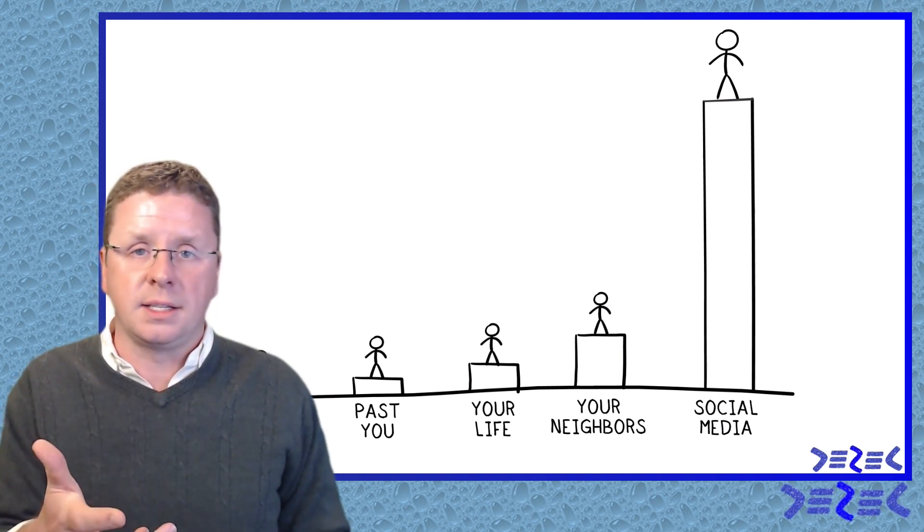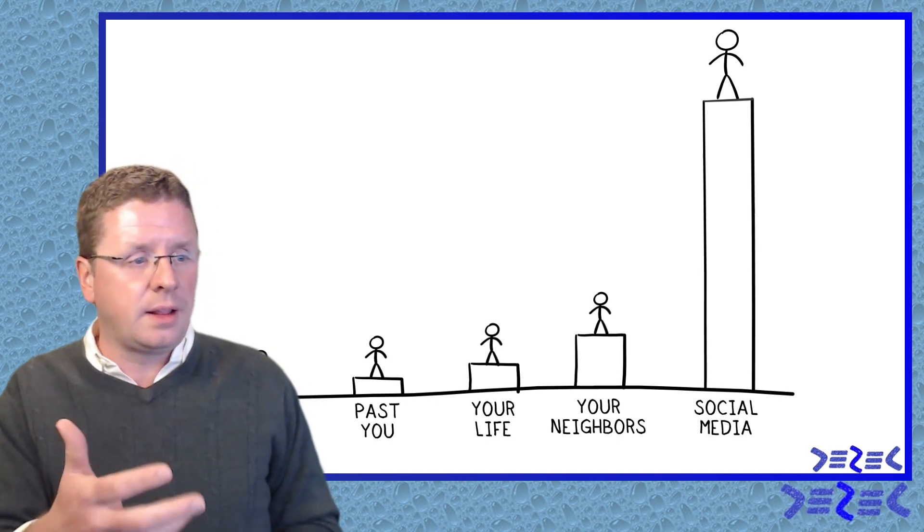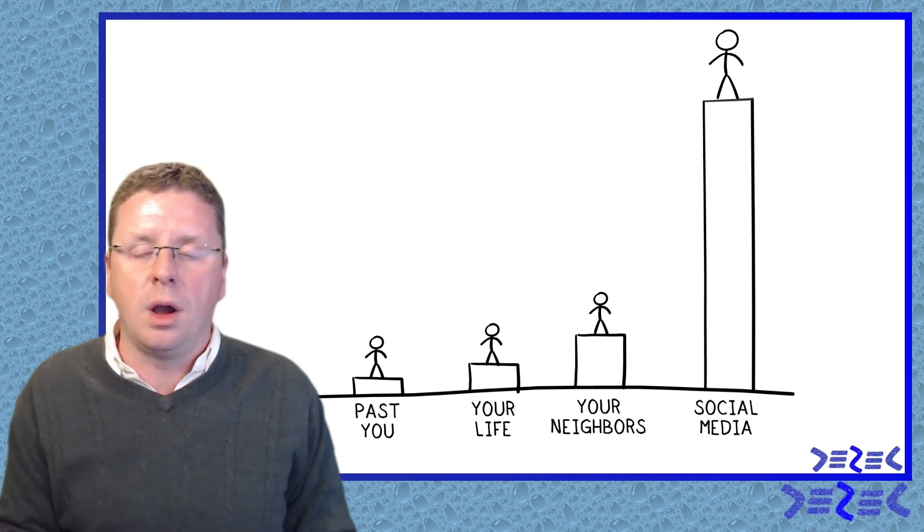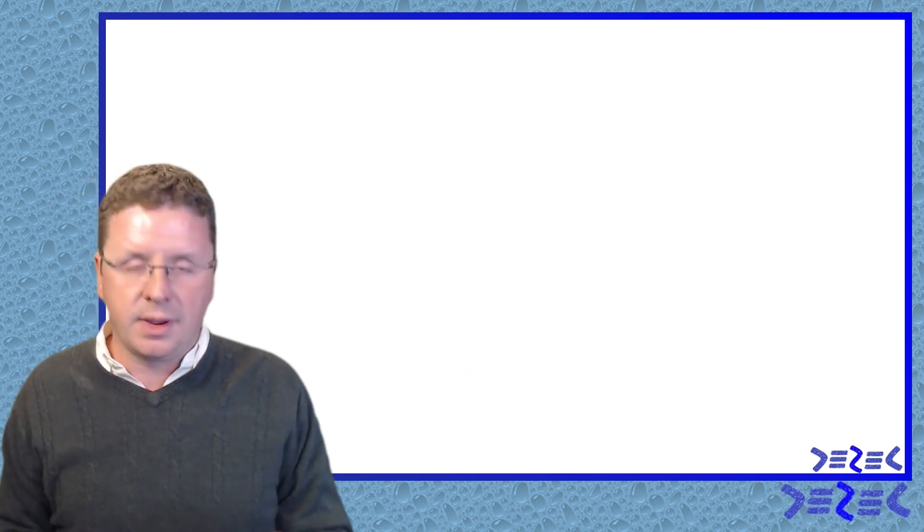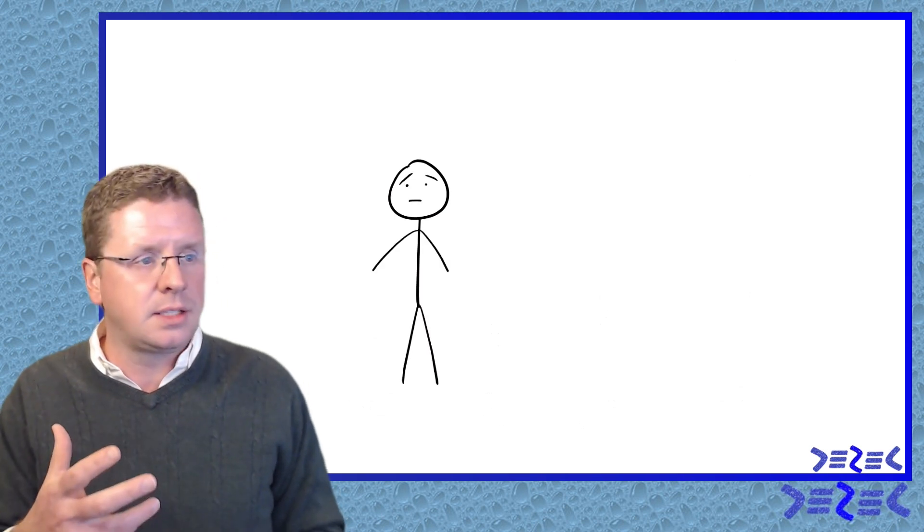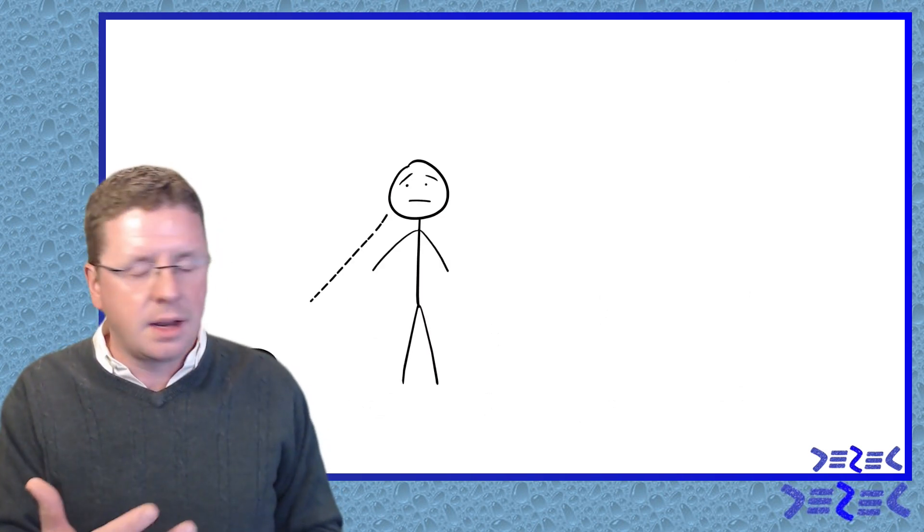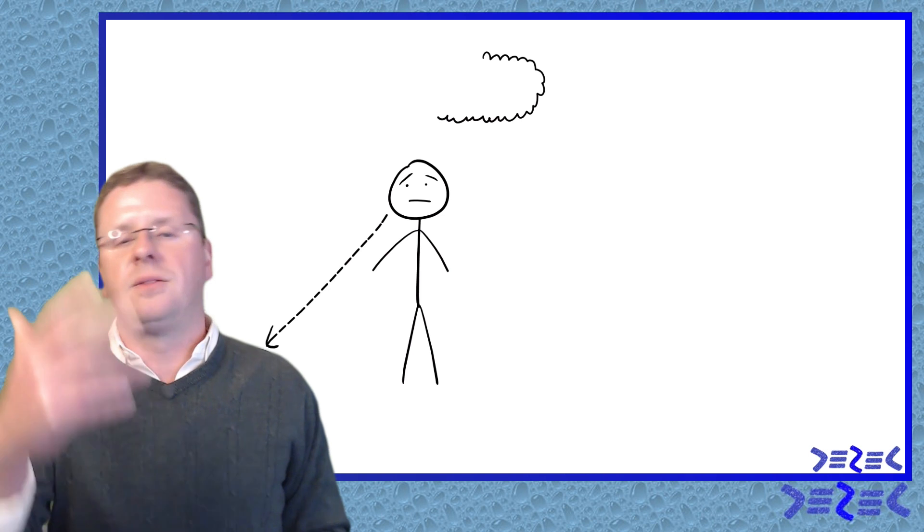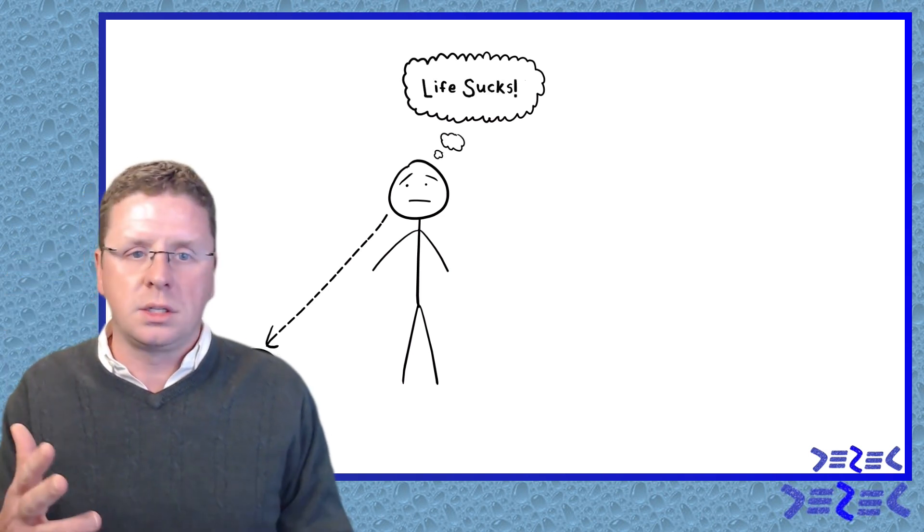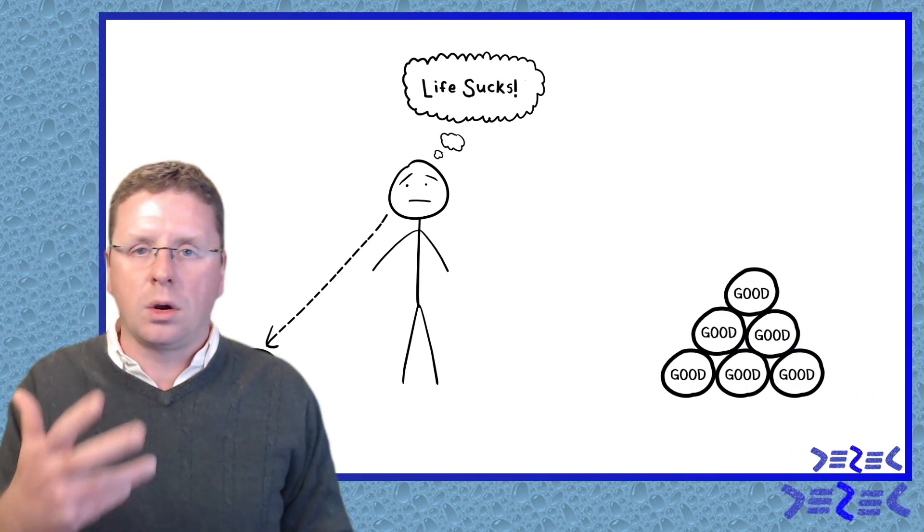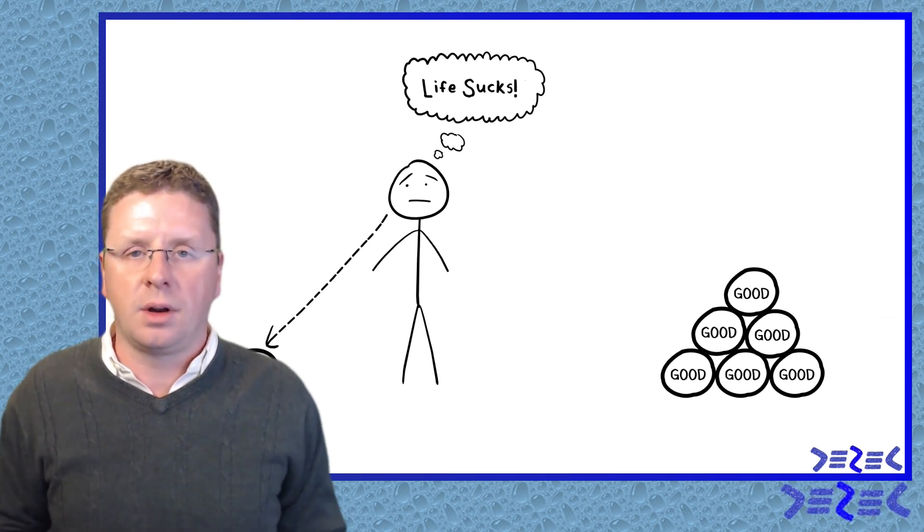This is crazy. We have great lives but we don't act like it. We pretend we don't. It's because we've got this inherent negativity bias where we see something bad and we say, well, this sucks, life sucks, it's the worst. And we ignore all these good things that are in our lives.